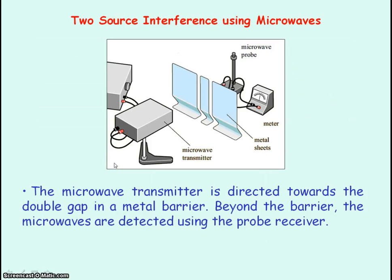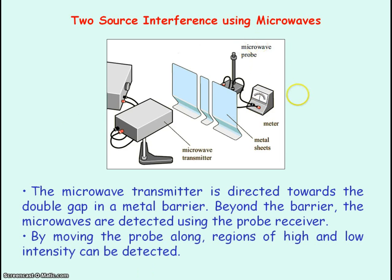This diagram shows the apparatus needed for two-source interference using microwaves. A microwave transmitter is directed towards a double gap formed by metal sheets. Beyond the metal sheets, a microwave probe receiver detects the microwaves, and the receiver is attached to a meter so we can get an indicator of the intensity of the microwaves being received. If the microwave probe is moved parallel to the sheets, regions of high and low intensity are detected, representing maxima and minima.